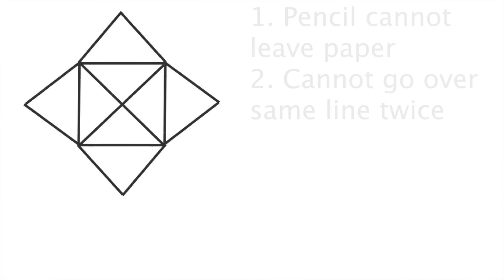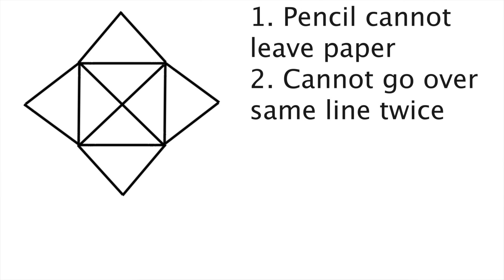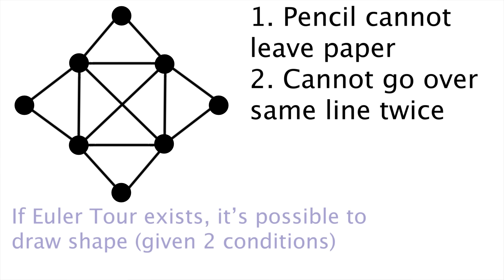Now going back to the drawing, given the two conditions, if we just represent these points as nodes, we can say that if an Euler tour exists, then it is possible to draw the shape.